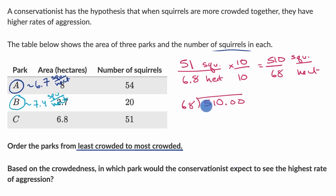68 will go into 510. It's close to 70, which would go into 510 about seven times. Seven times eight is 56. Seven times six is 42 plus five is 47. If I subtract here, to go from 476 to 500, I would add 24 plus another 10. So I have 34. Bring down a zero.